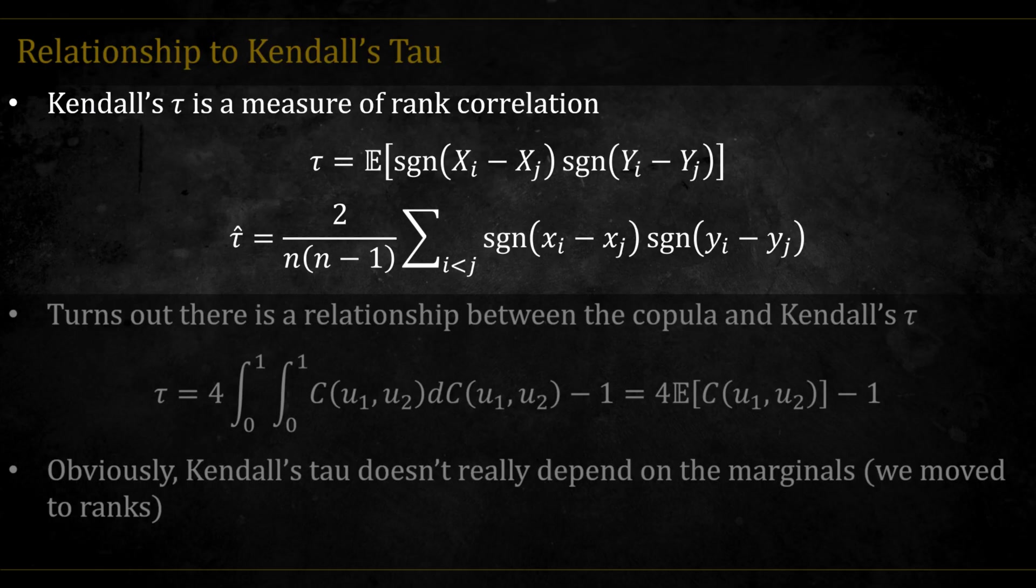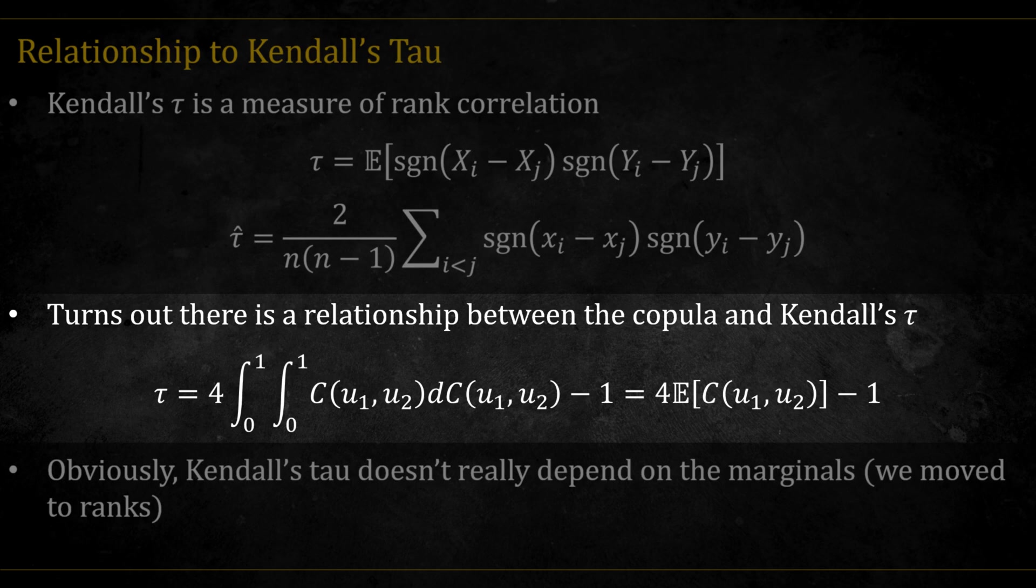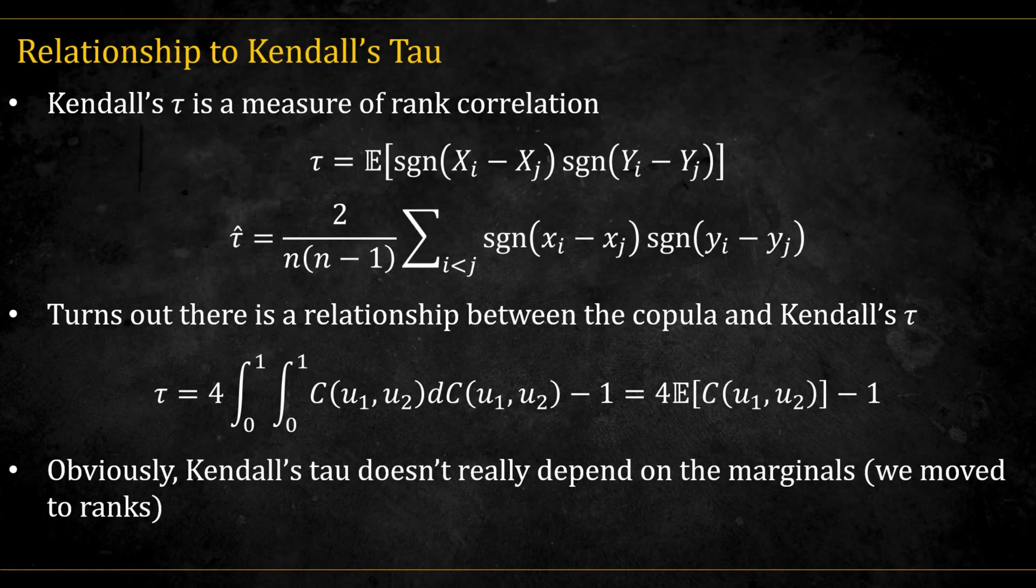In simple terms, if one data point has a larger x than another and it also has a larger y, that pair is concordant. The relationship between Kendall's tau and the copula function is given by this equation here.